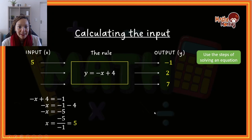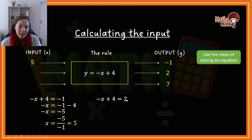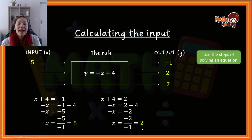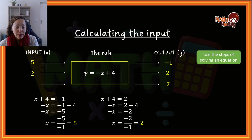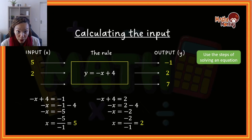Now let's do the same with output 2. Negative x plus 4 equals 2. Take the 4 over, simplify, then take the negative 1 over, and the answer is x equals 2. So the input is 2. Remember: to calculate output we use substitution, and to calculate input we use the equations method.